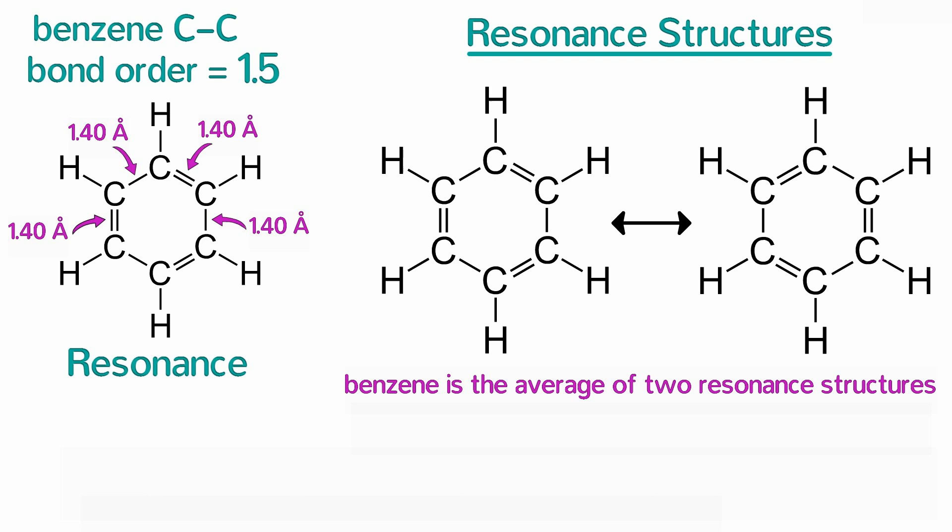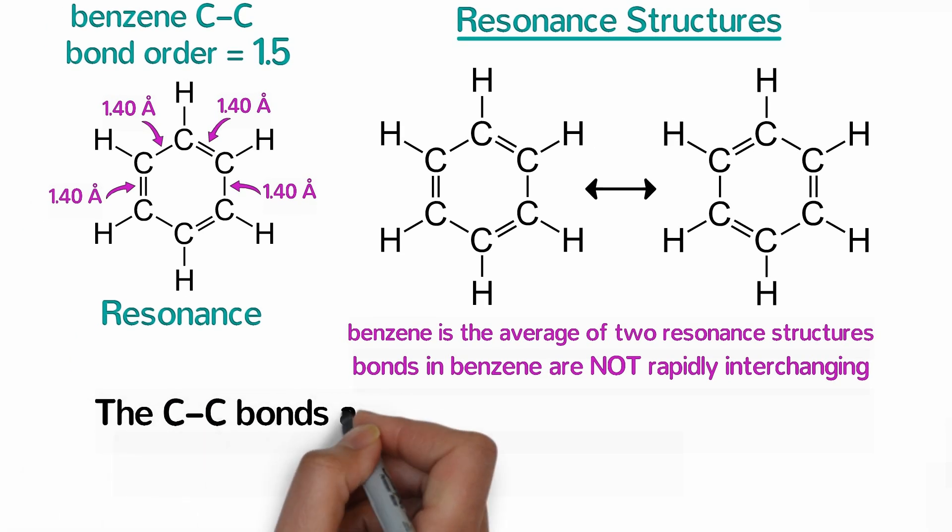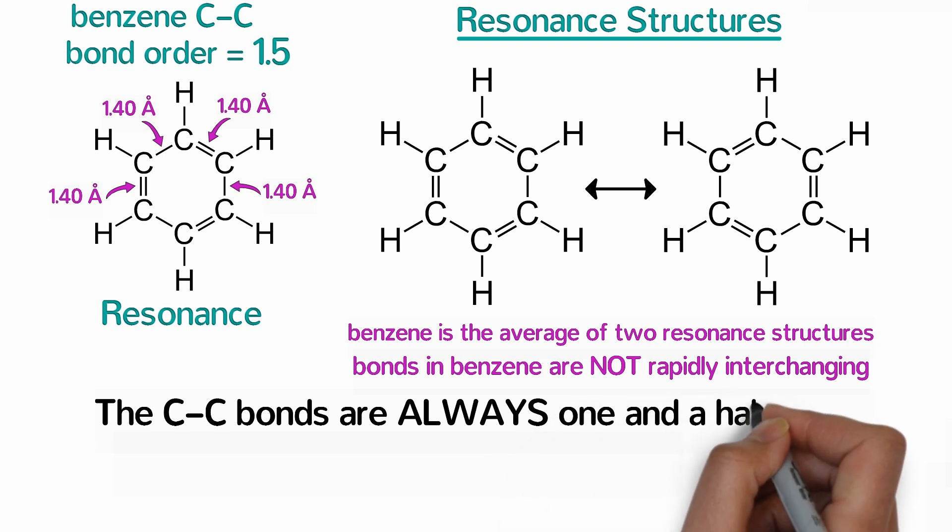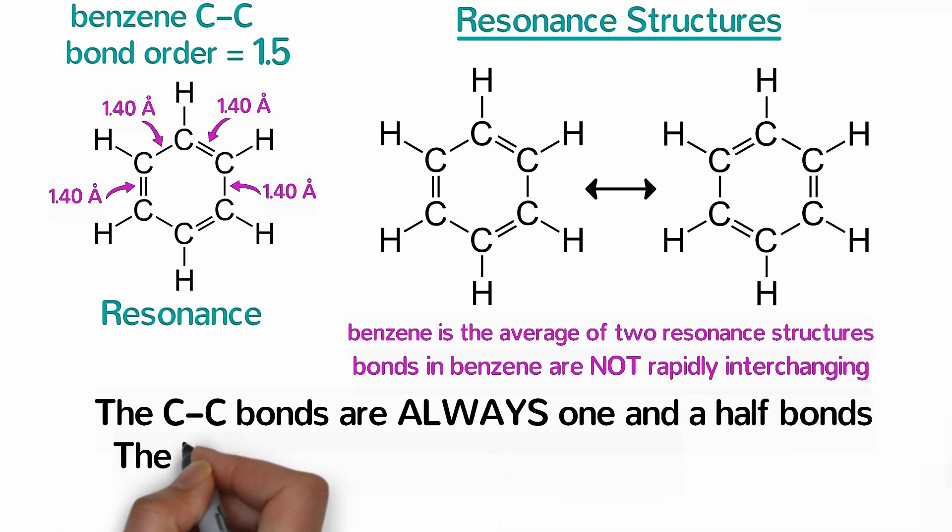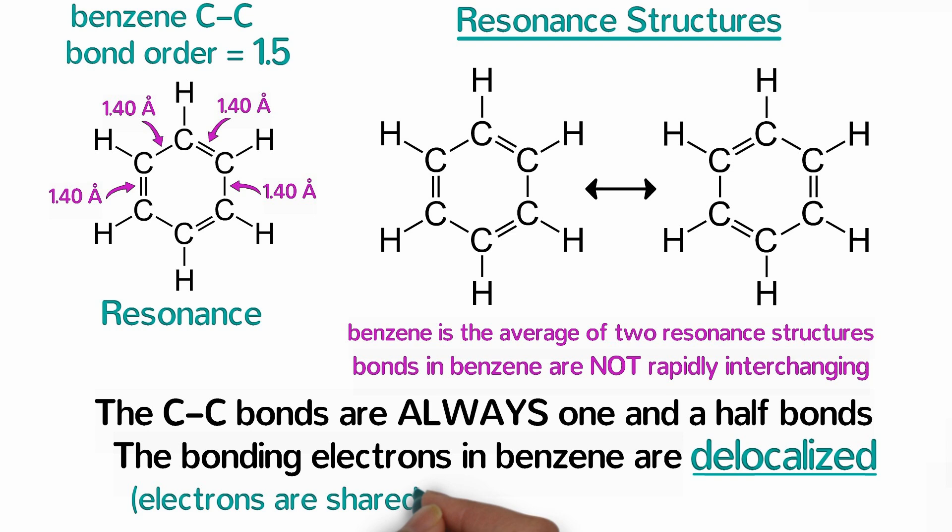However, what he got wrong is that the bonds in benzene are not rapidly interchanging. If they were, the x-ray structure would show it. Instead, the carbon-carbon bonds are always 1.5 bonds. Chemists describe this phenomenon by saying that the bonding electrons in benzene are delocalized. That is, the electrons are not stuck between only two atoms but shared between three or more atoms.